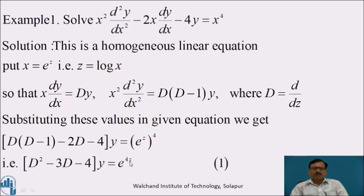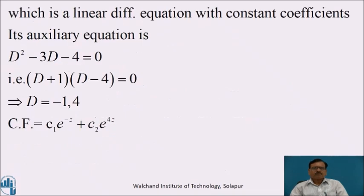Let us call this equation number 1. It is a linear differential equation with constant coefficients. Its auxiliary equation is D² - 3D - 4 = 0. Factoring gives (D+1)(D-4) = 0, so D = -1 and D = 4. Both roots are real and different.